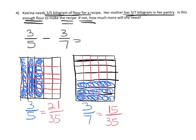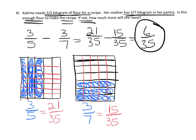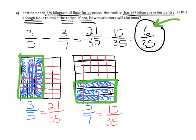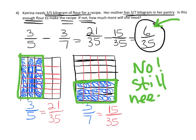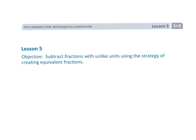Our new problem is twenty-one thirty-fifths minus fifteen thirty-fifths, and if we subtract we get six thirty-fifths. Katrina needs this much flour, but her mom only has this much — that's not enough. She still needs six thirty-fifths of a kilogram more. And that is grade five module three lesson five, where we're subtracting fractions using the area model.